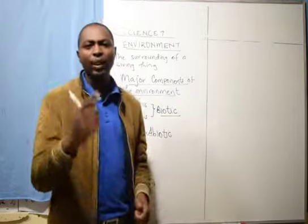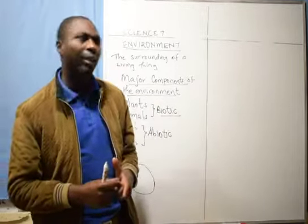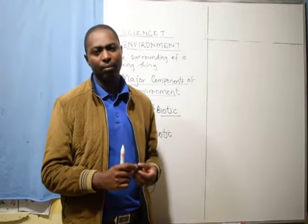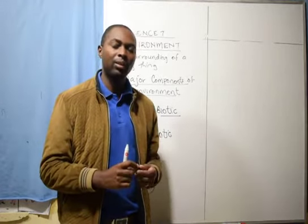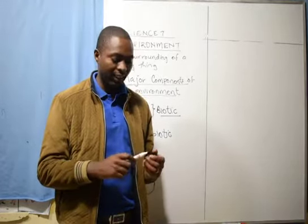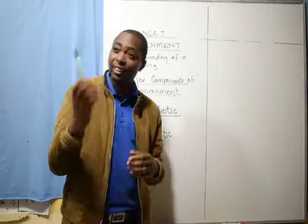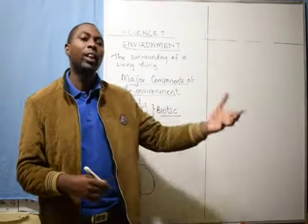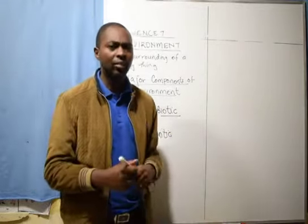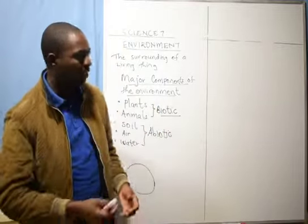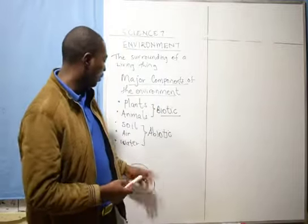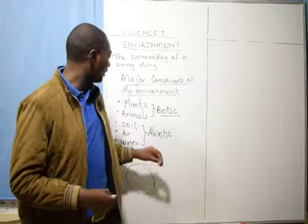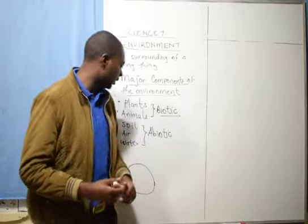We have light — light is very important, but we can live without light for some time. That's why we don't have light at night; sometimes we improvise with artificial light so that we can carry out activities. We also have sound, which is another component, but we cannot say it is major.